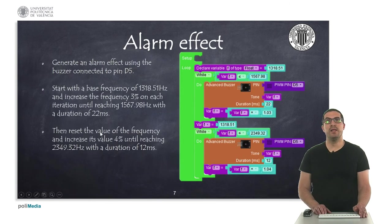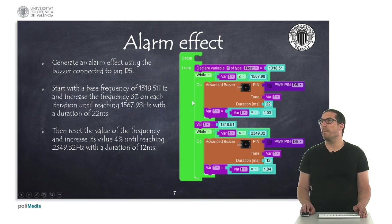And then, finally, here, in this example, what I'm doing is an alarm effect. Basically, what I'm doing is generating a variable frequency. It starts with this value here, and then, I'm in a while loop, I'm just simply waiting for the condition.